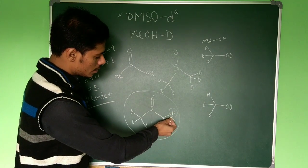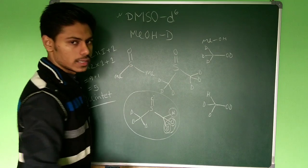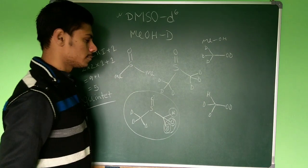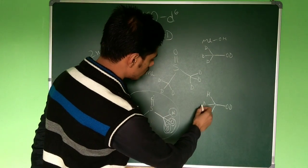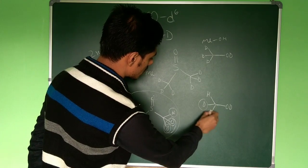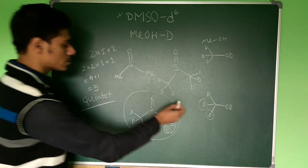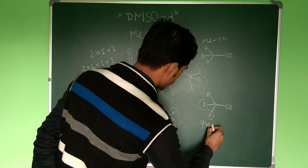Now let us see what will be the case of methanol. In case of methanol also you can see 2 deuterium are there and same proton will be applied, so here also you will get quintet.